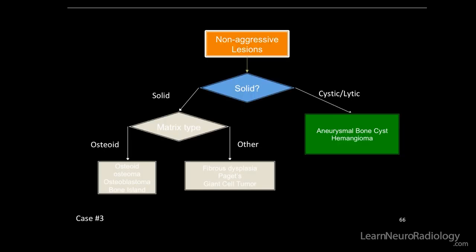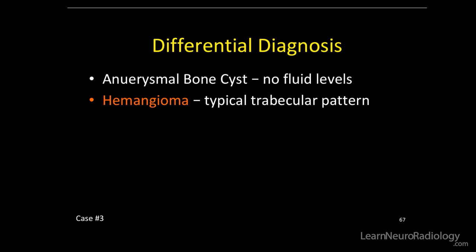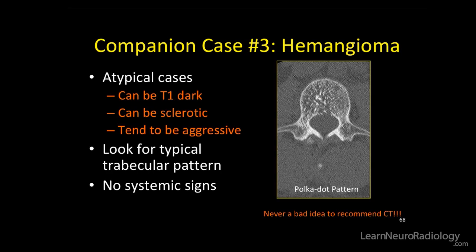Our differential is aneurysmal bone cyst or hemangioma. Probably not an ABC — it doesn't have the classic fluid-fluid levels, and it's in the anterior aspect of the vertebral body, not the posterior elements. So this is a hemangioma with a typical trabecular pattern. On axial imaging, the classic polka dot trabecular pattern; on coronal and sagittal images, it's called the corduroy pattern.